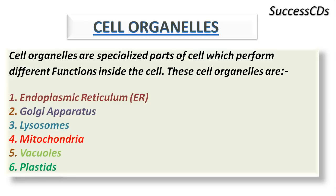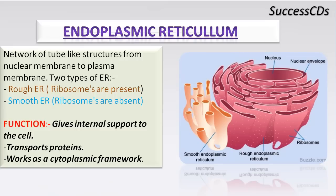The cell organelles include endoplasmic reticulum, Golgi apparatus, lysosomes, mitochondria, vacuoles, and plastids. The endoplasmic reticulum is a network of tube-like structures — very long tubes, and in some cells they are oblong sacs. It is of two types: rough endoplasmic reticulum, in which ribosomes are present, and smooth endoplasmic reticulum, in which ribosomes are absent. Ribosomes are the builders of proteins inside the cell. The function of the endoplasmic reticulum is to provide internal support to the cell, acting as the skeleton system, transporting proteins, and working as a cytoplasmic framework.